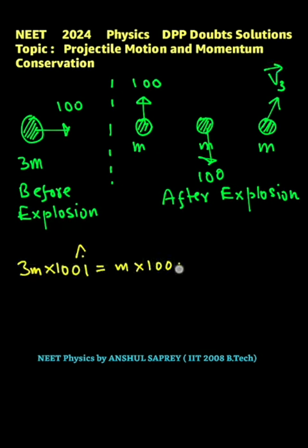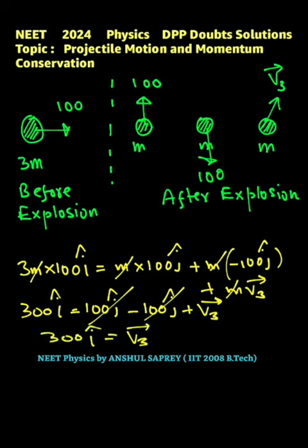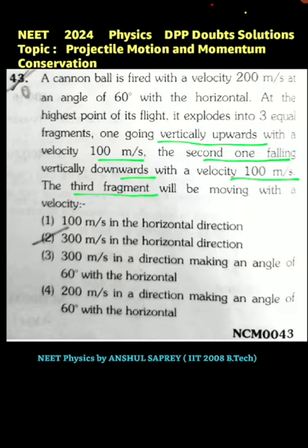m is cancelled, so 300 i cap equals 100 j cap minus 100 j cap plus v3 vector. We are getting v3 vector equals 300 i cap. So the velocity of the third fragment is 300 meters per second along positive x direction, that is the horizontal direction. The correct option is the second option.